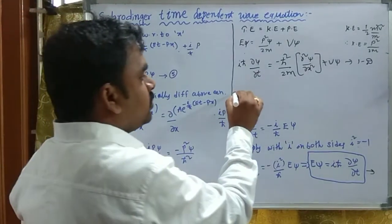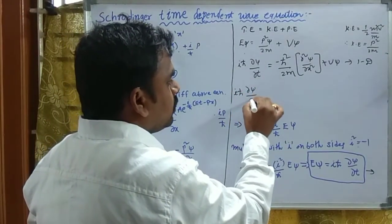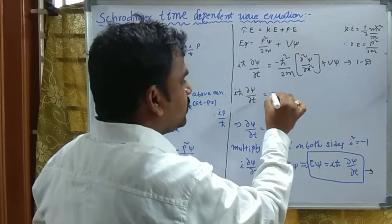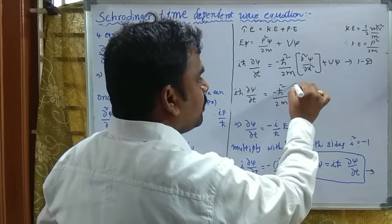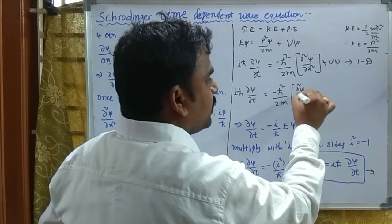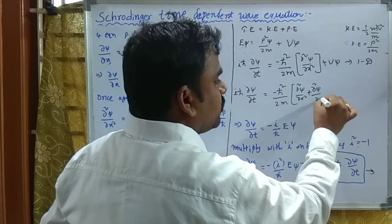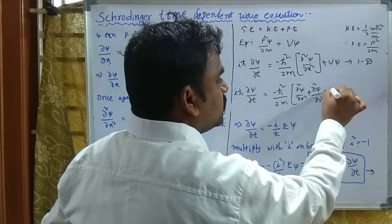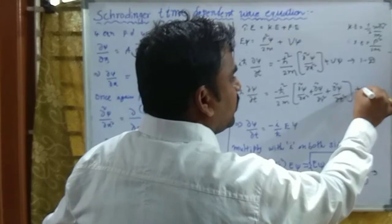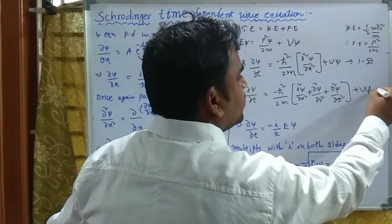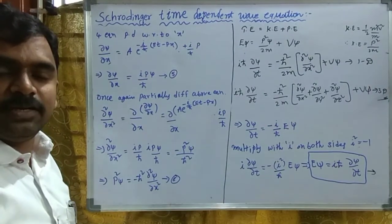In three dimensions, we introduce the remaining coordinates y and z as well. The three-dimensional Schrödinger time-dependent wave equation is: i·h-bar·∂ψ/∂t equals minus h-bar²/2m·(∂²ψ/∂x² plus ∂²ψ/∂y² plus ∂²ψ/∂z²) plus V·ψ. This is the three-dimensional wave equation.